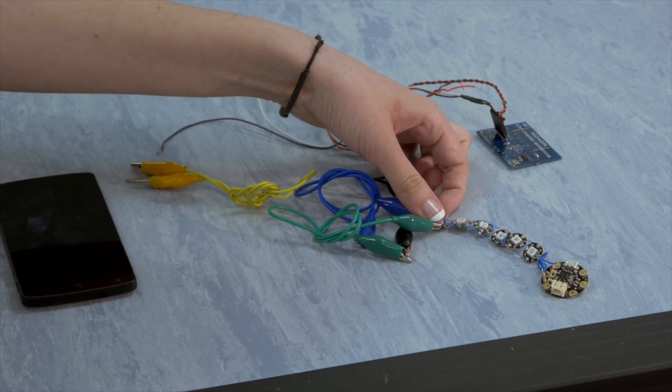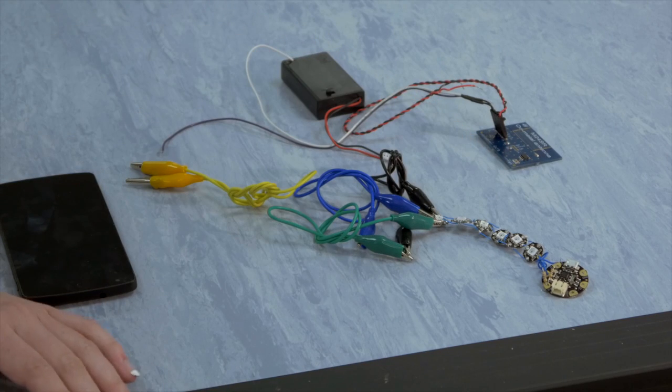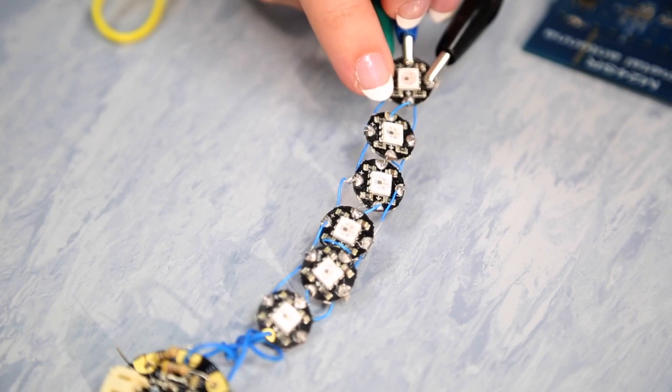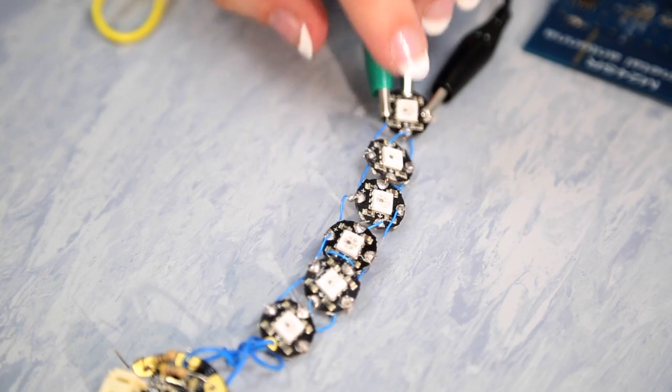Attached to the Gemma are six NeoPixels. These are chainable, meaning that you only need to use one output pin on the Gemma. And they're also capable of a full spectrum of RGB colours, meaning that you can pick any colour that you want.